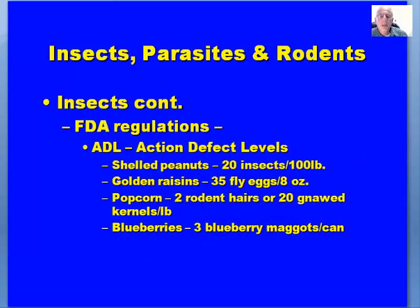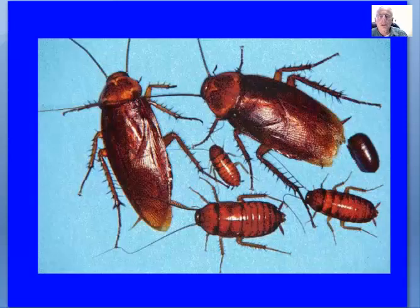Some examples of defect action levels: shelled peanuts can have 20 insects per 100 pounds; golden raisins may contain up to 35 fly eggs per eight ounces; popcorn can have two rodent hairs or 20 gnawed kernels per pound; and blueberries can have three blueberry maggots per can. These numbers can be lowered as new processing and preservation methods come online.